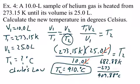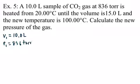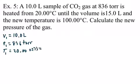Looking at the Kelvin values, when volume goes up, temperature also goes up — confirming that in Charles' Law, temperature and volume are directly proportional. The math confirms the theory. Moving on to example five: we have a volume of 10 liters, a pressure of 836 Torrs, heated from an original temperature of 20°C — and we must convert that to Kelvin right away.